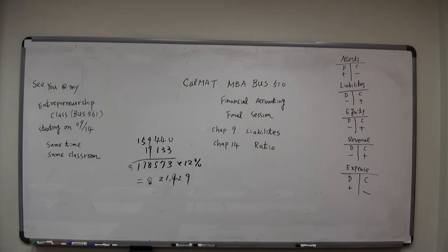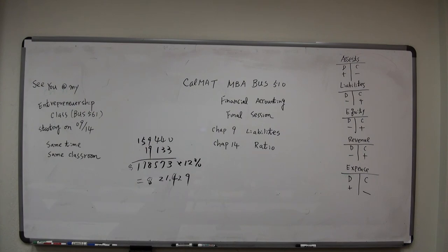A student asks: why do we use average stockholders' equity? Why average? Because there are two numbers — or really 365 numbers, since the number changes every day. As long as those numbers are close enough, the variation doesn't matter. We only care if the numbers vary too much.